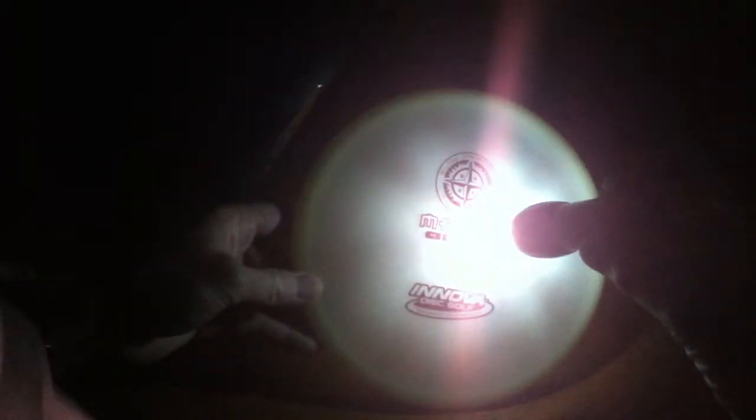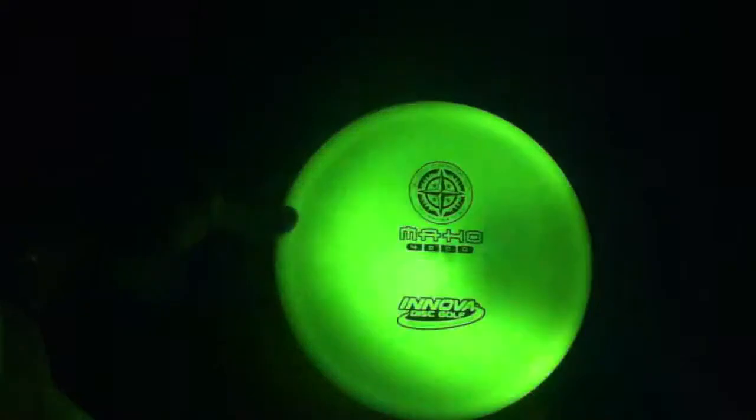So here is a white flashlight and a glow in the dark disc. And you can see as I take the white light away, it doesn't energize the disc very well at all. Now we'll run the same experiment using a UV light. And you can see that the UV light does a much better job of energizing the disc.